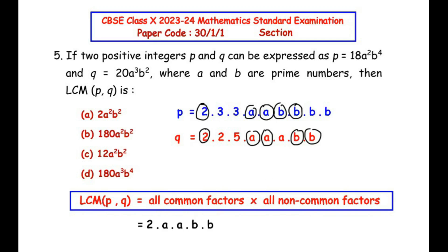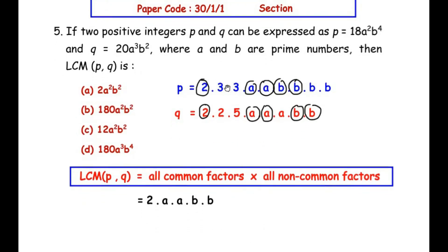Let us write all the common factors under this: we have written 2 as one of the common factors, then 2 a's are common and 2 b's are common. For all non-common factors, we have to just write down all the factors which we have not circled: 2 times 3 times 3 times 5 times a times b times b. These are all common factors and these are all non-common factors.